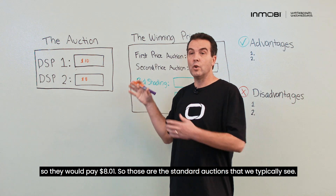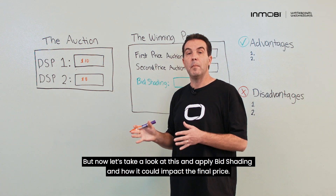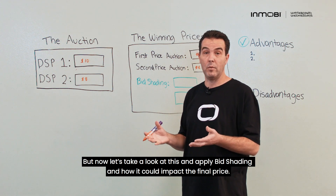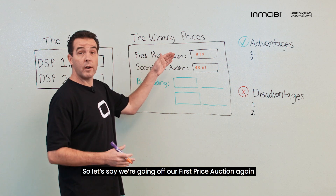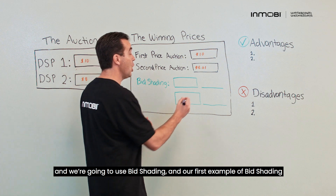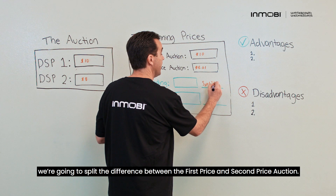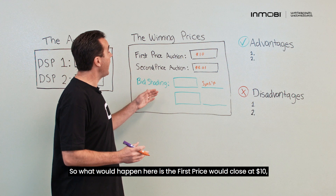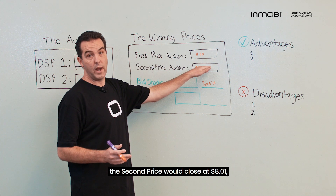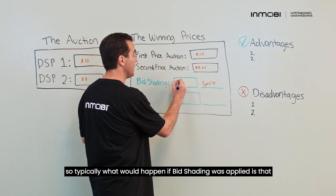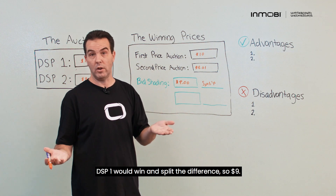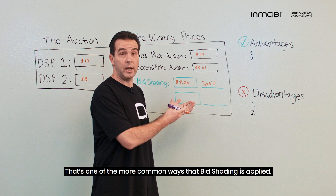Those are the standard auctions. Now let's apply bid shading and see how it could impact the final price. Using a first price auction with bid shading, in our first example we'll split the difference between the first price and second price auction. The first price closes at $10, the second price at $8.01. With bid shading applied, DSP1 would win and split the difference — paying $9. That's one of the more common ways bid shading is applied.